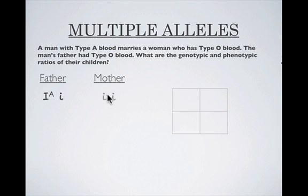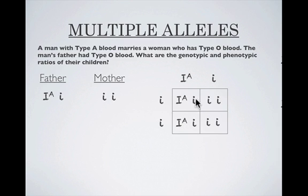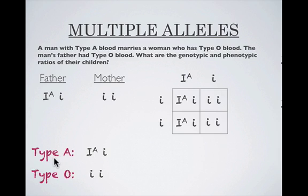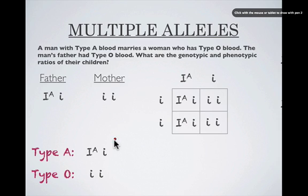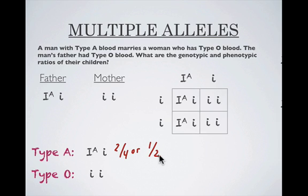Mom is pretty simple because she has type O blood, so she's going to be little i, little i. If we crank out the Punnett Square, we see the different types of children they can have. Looking at the probability of getting type A blood, the only genotype available is I^A and little i. We have two chances out of four — or one half — of getting type A blood.